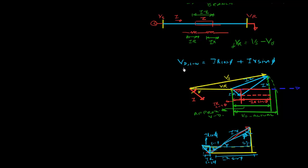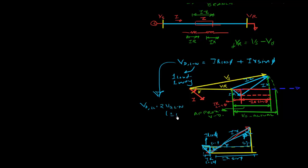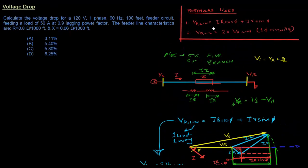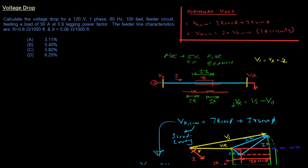That's the vector diagram used to derive this equation. The voltage drop line-to-line for single-phase circuits is 2 × V_D(line-to-neutral), and for three-phase circuits it is √3 × V_D(line-to-neutral). For our single-phase problem, we multiply by 2 to get the line-to-line voltage drop, then calculate the percentage.